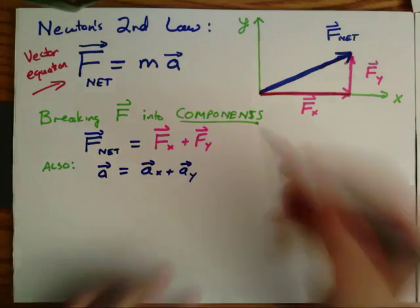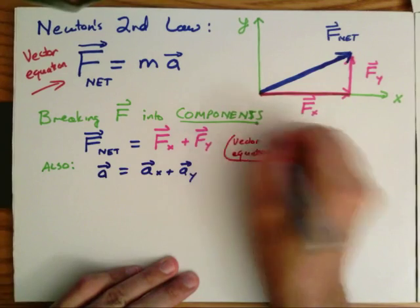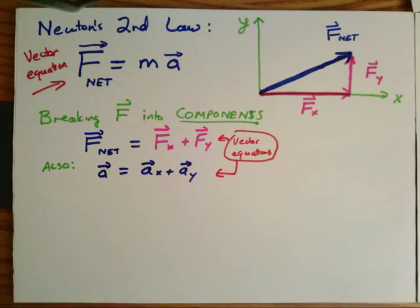And again, these are vector equations, where the quantities on each side of the equal sign are vectors, indicated by the little arrows on top.